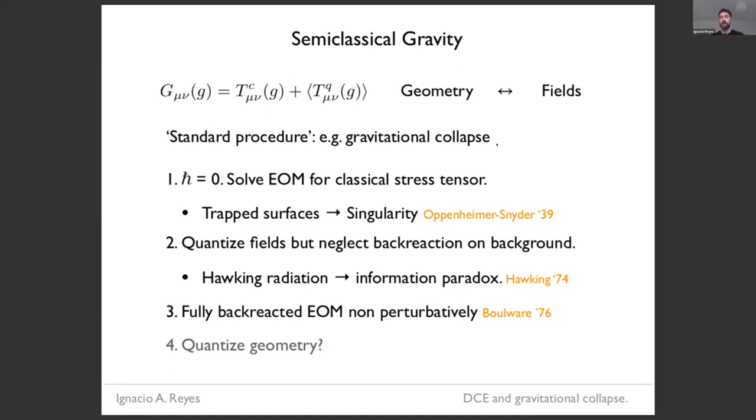So although this problem is very hard, I think there's a logic or a procedure that I think of as a standard procedure in tackling this problem, which I can illustrate with the example of gravitational collapse. So the first step is to put h bar equal to zero. Everything is classical, and we solve the equations of motion with a classical stress tensor. We can find some solutions. Maybe they form trap surfaces and therefore lead to singularities. This would be, for example, the classic paper by Oppenheimer and Snyder.